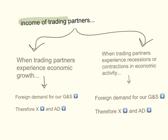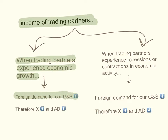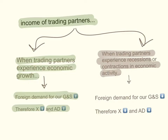The income of your main trading partners will obviously affect how much they buy from you. When trading partners experience economic growth, their economies are growing. This means that the foreign demand for our goods and services will increase, and therefore our exports to these countries will increase and aggregate demand will increase. And the opposite is true. If your trading partners are experiencing recessions or contractions in economic activity, the foreign demand for our goods and services will fall. Therefore, exports will decrease and aggregate demand will decrease — the curve will shift to the left.